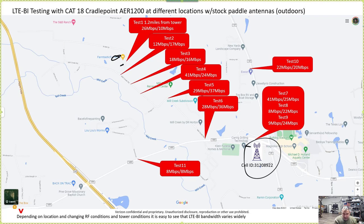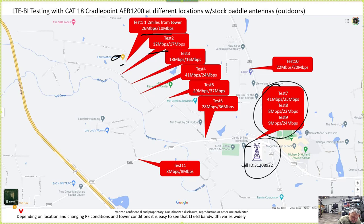I'm stopping and rebooting the router at each test to make sure everything settles in, I get connected to the proper bands, and so on. Look at this: 26 down, 10 up — that's okay. But just a few hundred feet down the road: 12 down, 17 up. You can see for the rest of the results there is variability.